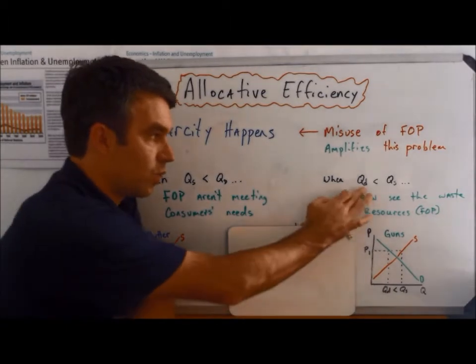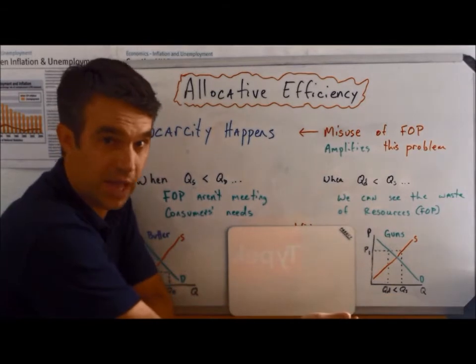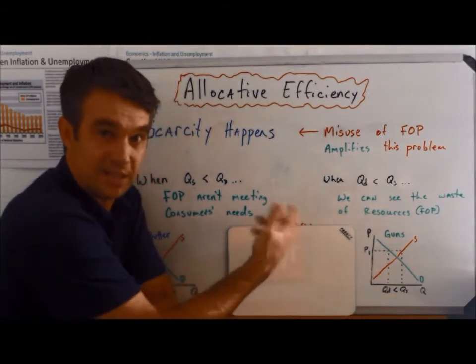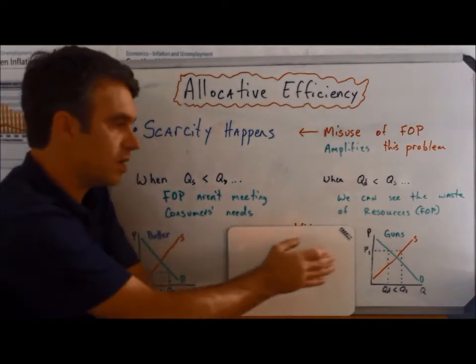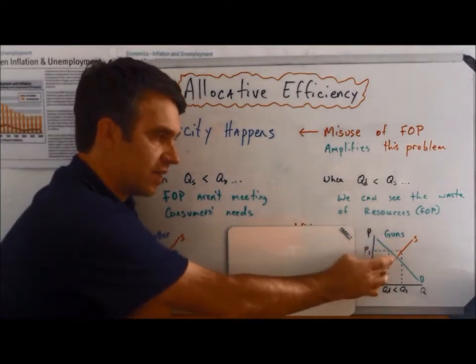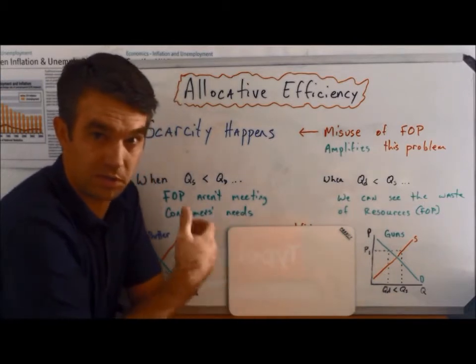Or when quantity demanded is less than quantity supplied, well, now we have excess supply, and this is a little bit easier to see. This one's kind of more of a concept, but here you can actually see that the amount of guns produced, well, there were resources, land, labor,